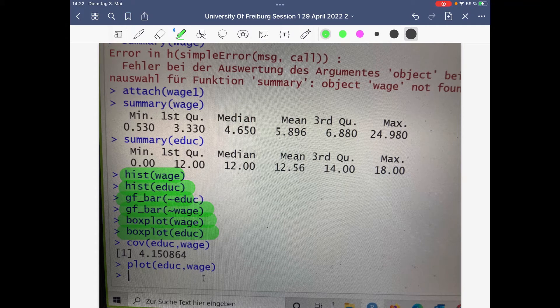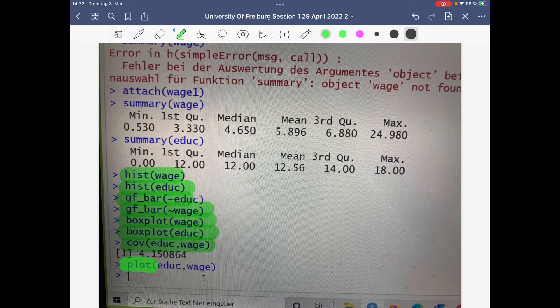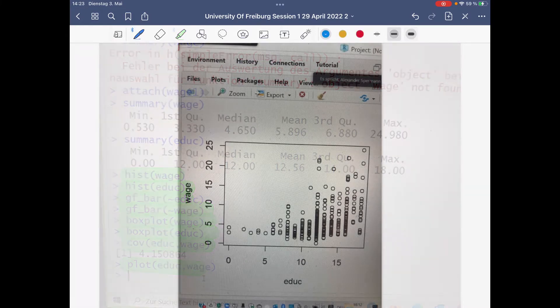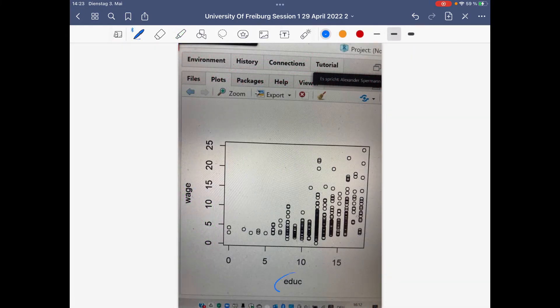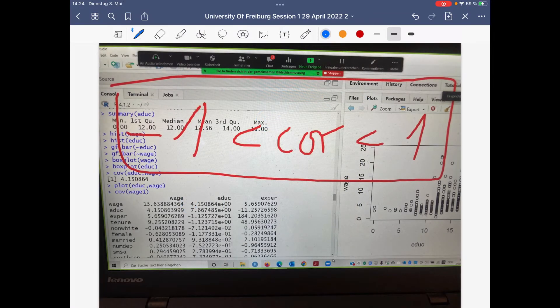Please use boxplot wage, boxplot education for the boxplots. I don't show that here in the video, but I'll show the covariance visualized in the scatter plot. So that's the scatter plot with education, wage that visualizes the covariance.